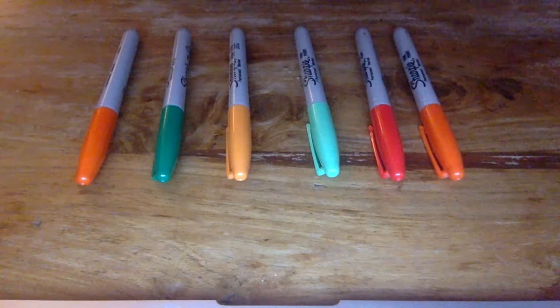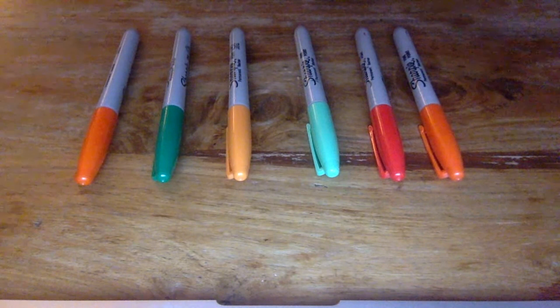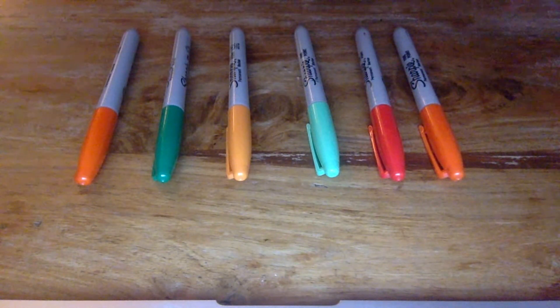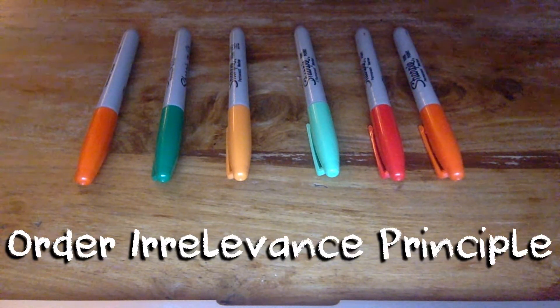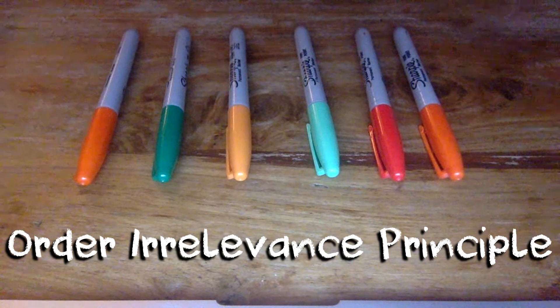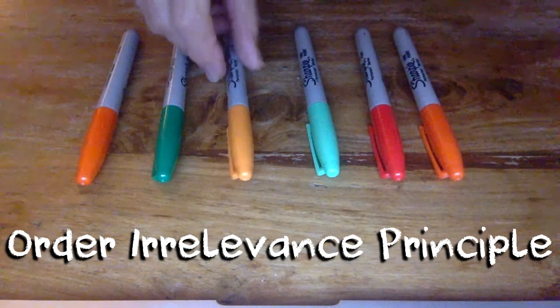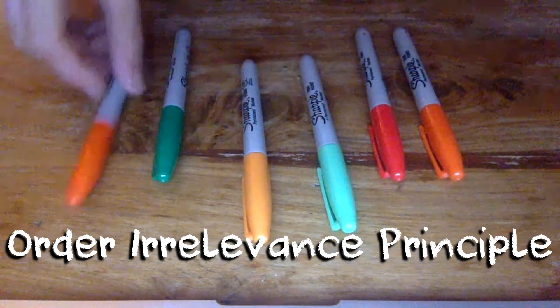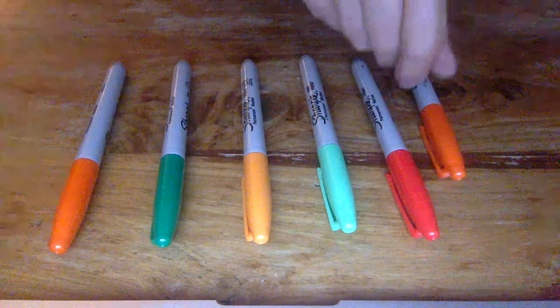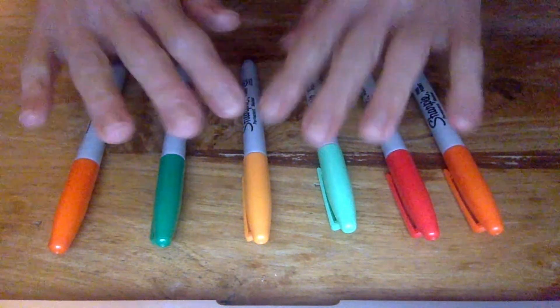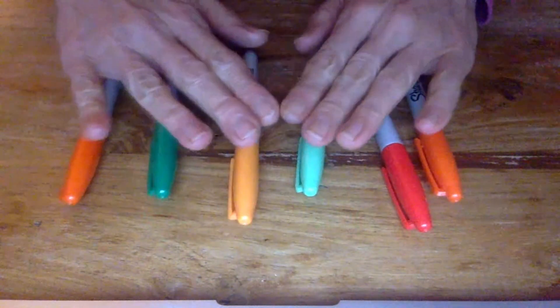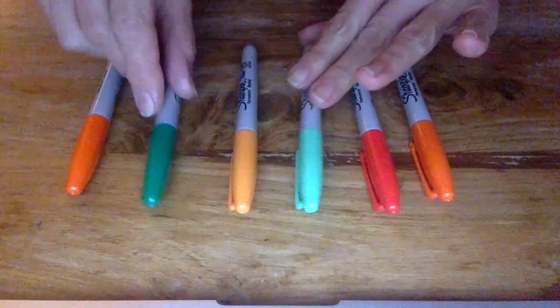Now the order irrelevance principle kind of goes hand in hand with this one too. And this refers to the understanding that the order in which the objects in a group are counted is not important. So we can count them one, two, three, four, five, six. We've still got six. We just counted them in a different order. The number is still the same.